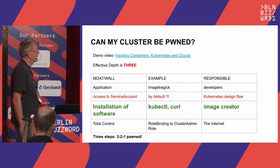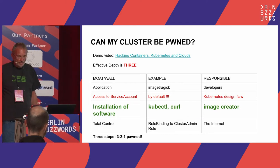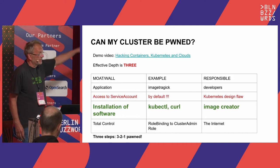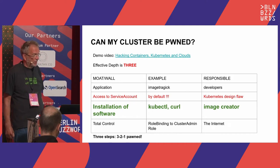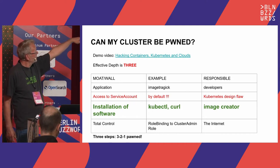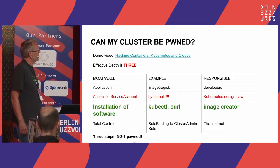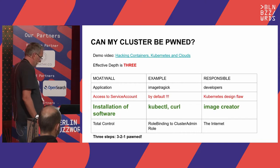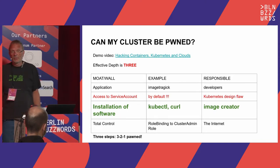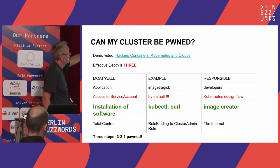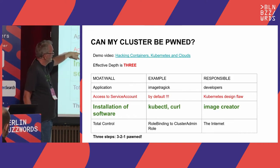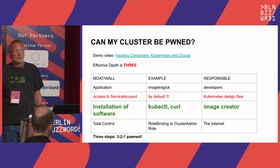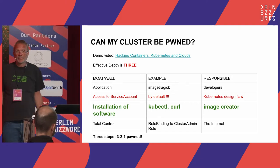Let's look at how deep security is in Kubernetes. Effectively — and I've done a hack on this, there will be a link in the slides to a talk where I hacked an OpenShift cluster from the outside — the effective depth in Kubernetes is only three. It could be four, but Kubernetes has a design flaw: everybody is using service account tokens inside containers, which is only necessary if you have an operator running in that container.